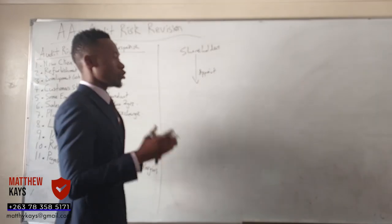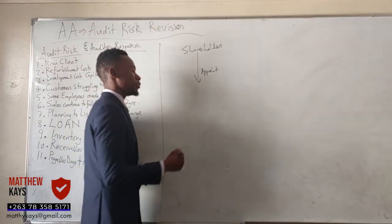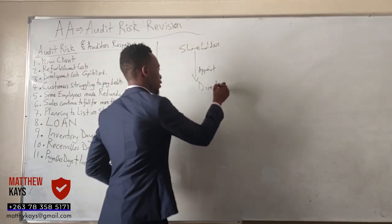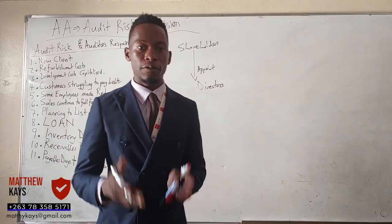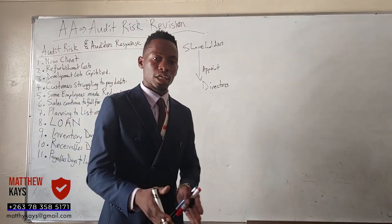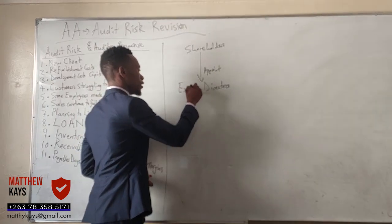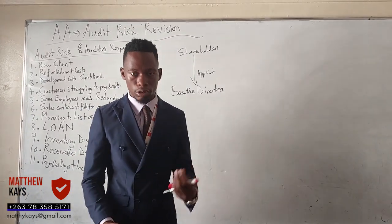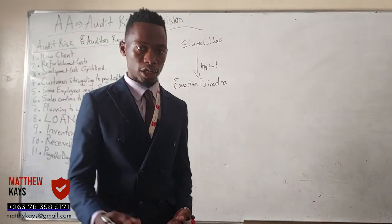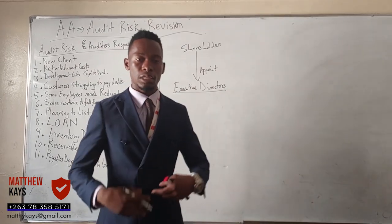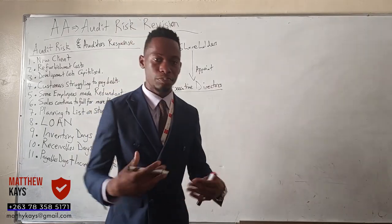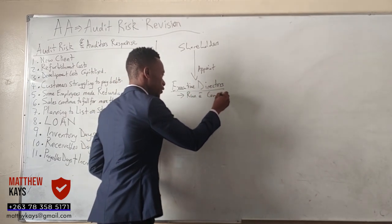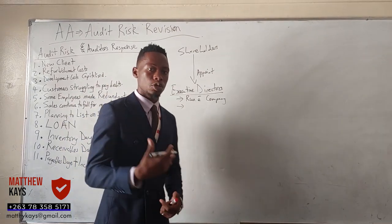The company is owned by the shareholders, but the shareholders appoint people to run the company on their behalf. Those people — what do we call them? They are the executive directors. The executive directors are hired by the shareholders to run the company on their behalf. They are qualified people with experience and expertise, and their responsibility is to run the company.